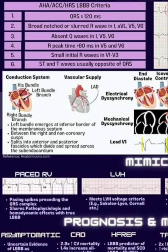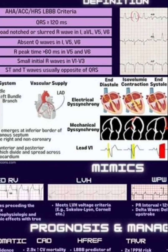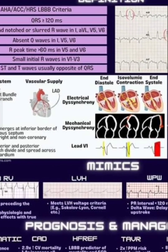Transthoracic echocardiography for structural heart disease is a Class 1B recommendation. In coronary artery disease, LBBB is associated with a 2.9 times increase in cardiovascular mortality and a 1.4 times increase in all-cause mortality. There is increased mortality in acute MI associated with new LBBB. Left bundle branch block is a contraindication for ECG stress testing.